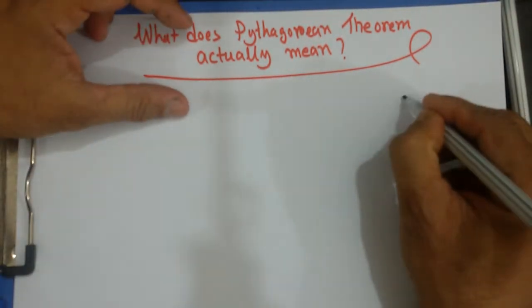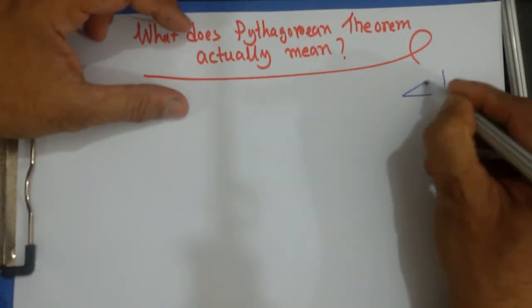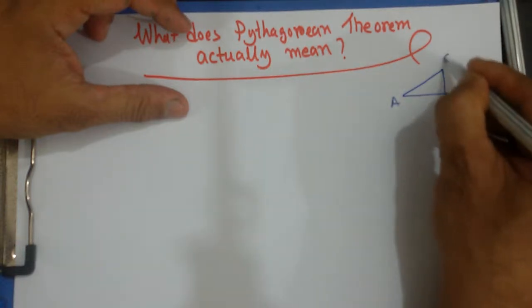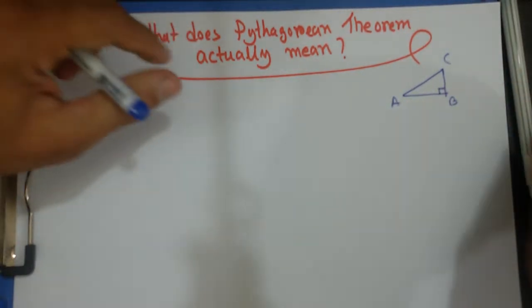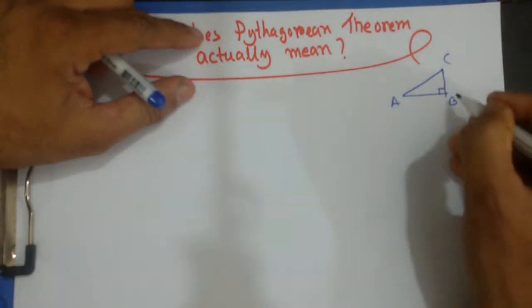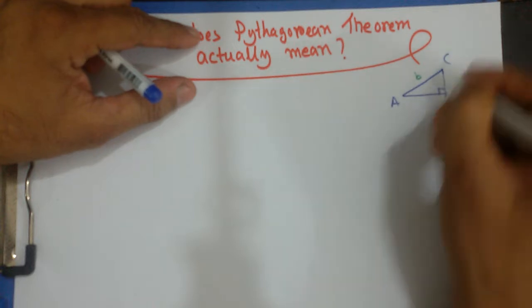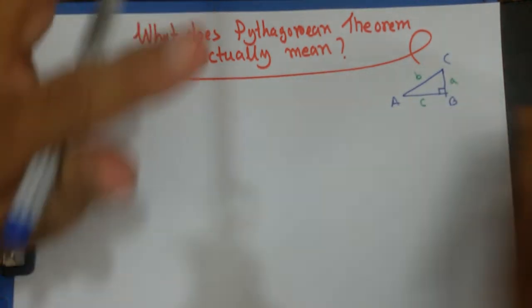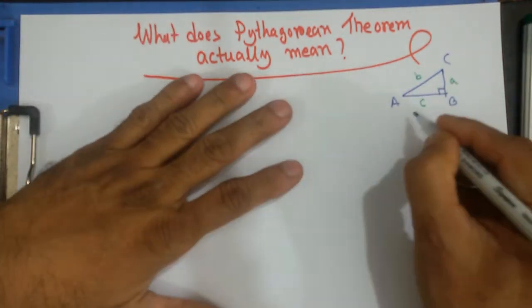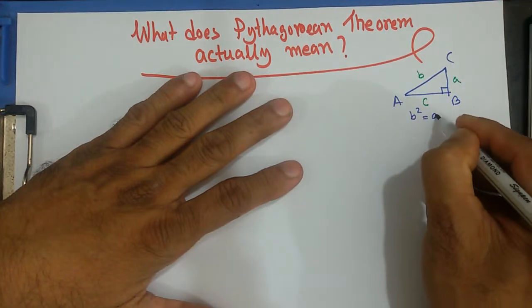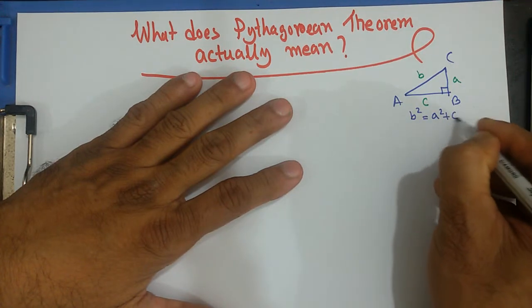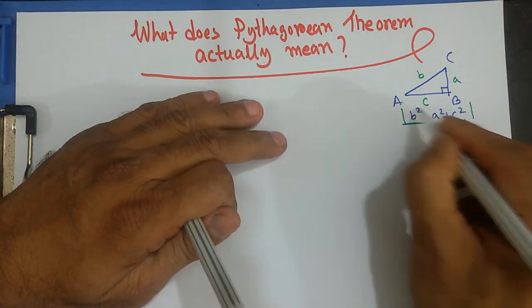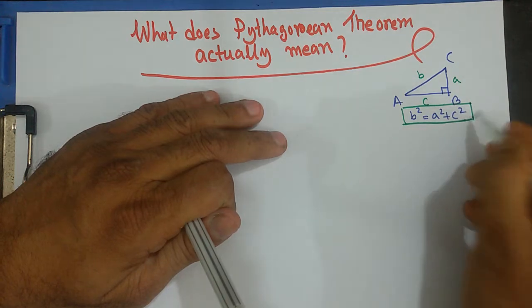We know that if we have a triangle such as this one — ABC — with a right angle, the opposite side of one angle is B, opposite side is C, and opposite side is A. So we can write down B squared equals A squared plus C squared. We call it Pythagoras' Theorem or the Pythagorean Theorem.